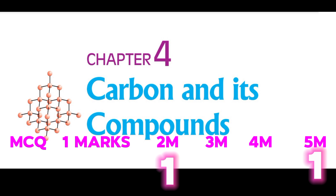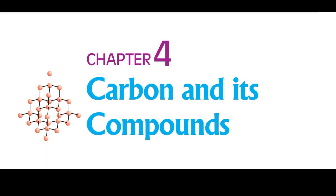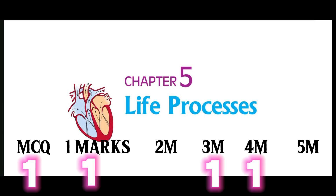Coming to the fourth chapter, Carbon and Its Compounds. They will ask one MCQ, one two-mark question, and one five-mark question. Questions may be in the form of halogen groups or functional groups, asking you to draw carbon chains and bonding reactions. Know the carbon-carbon bonding, structural formulas, and functional groups. The question may be split into parts A and B for five marks. Go through all functional groups including bonding, reactivity, and halogen groups.